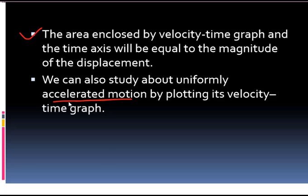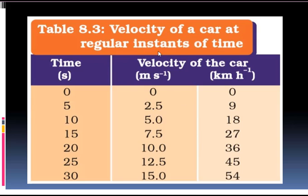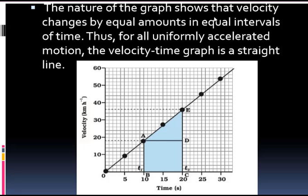What is accelerated motion has been explained in detail in previous classes. Now, this is a table showing velocity of a car at regular instances of time. When time is zero, velocity is zero. After five seconds, velocity is 2.5 m/s; at 10 seconds, it is 5 m/s. When time increases with a uniform rate, velocity also increases with a uniform rate. The nature of the graph shows that velocity changes by equal amounts in equal intervals of time. Thus, for all uniformly accelerated motion, the velocity-time graph is a straight line.